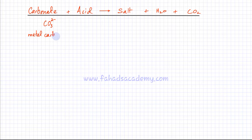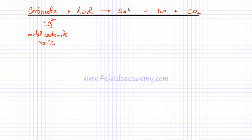Metal carbonates consist of a metal ion and a carbonate ion. For example, there's sodium carbonate. Na is 1+, CO₃ is 2−. So, using the crisscross method, the formula is going to be Na₂CO₃.